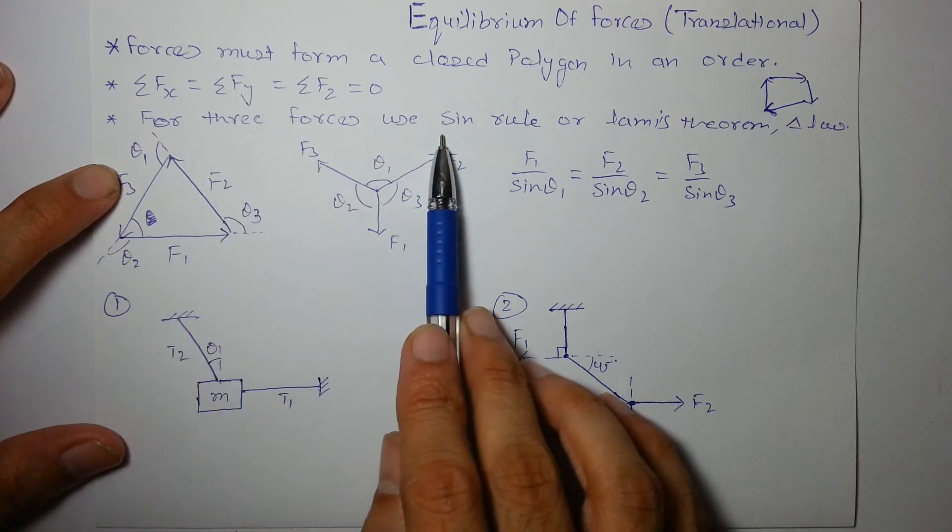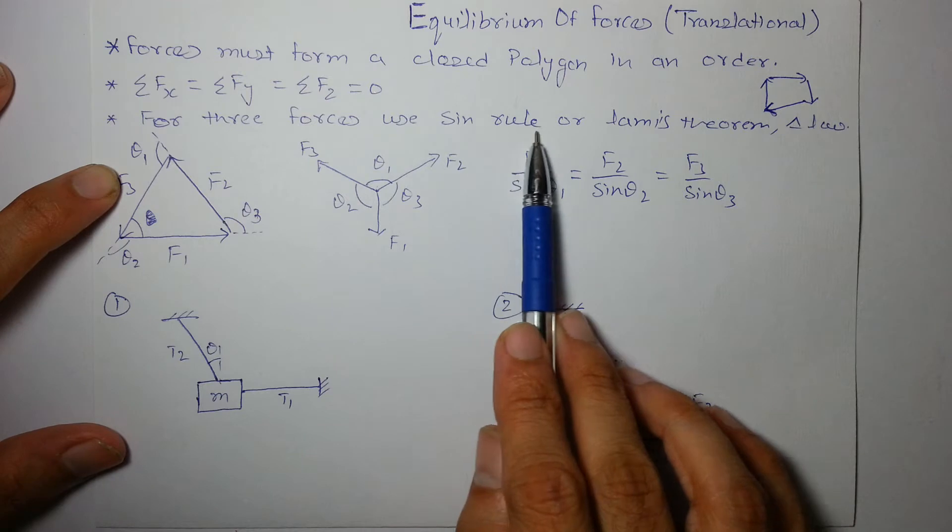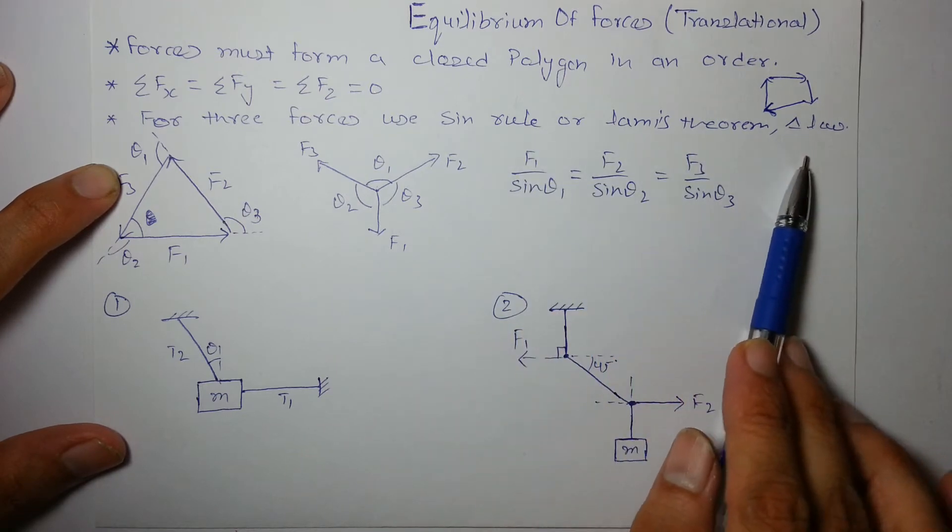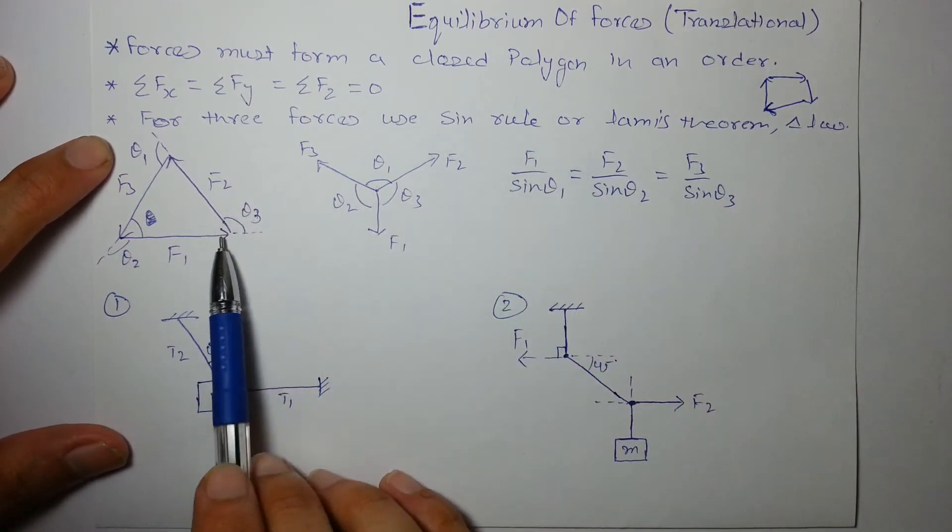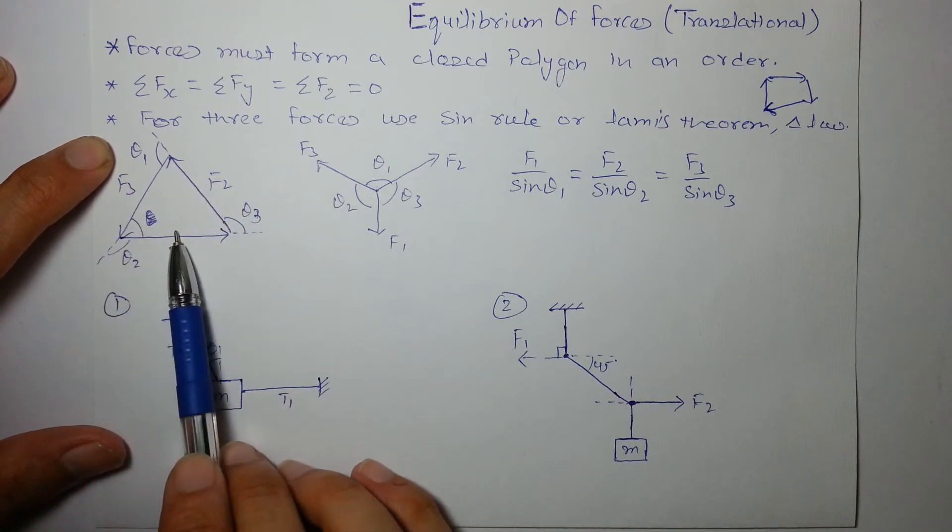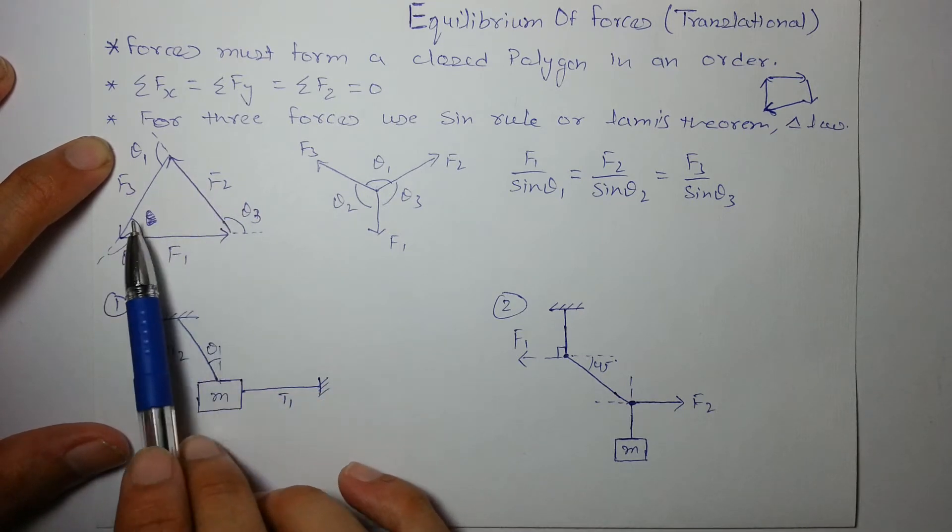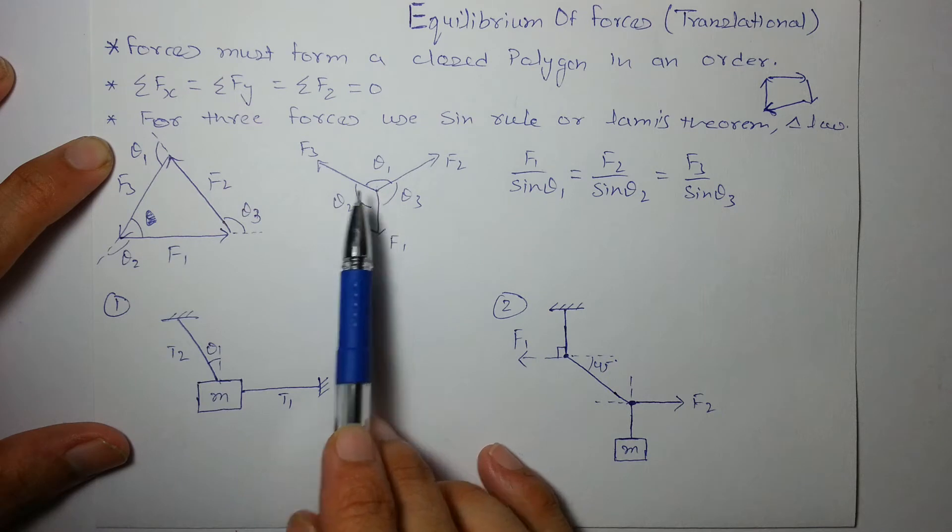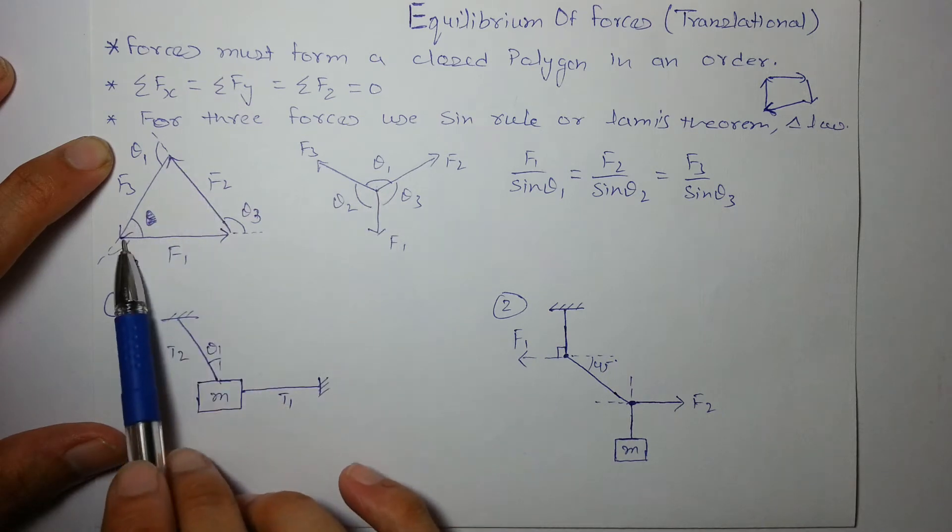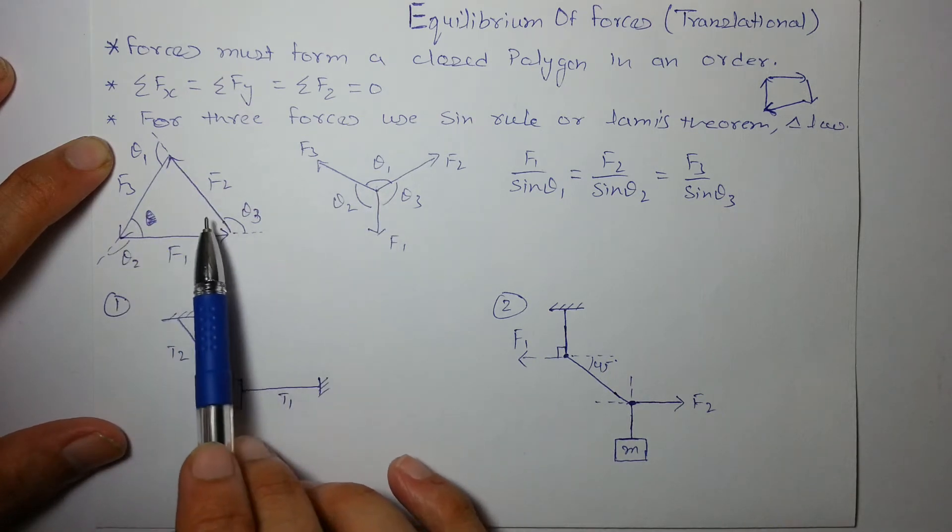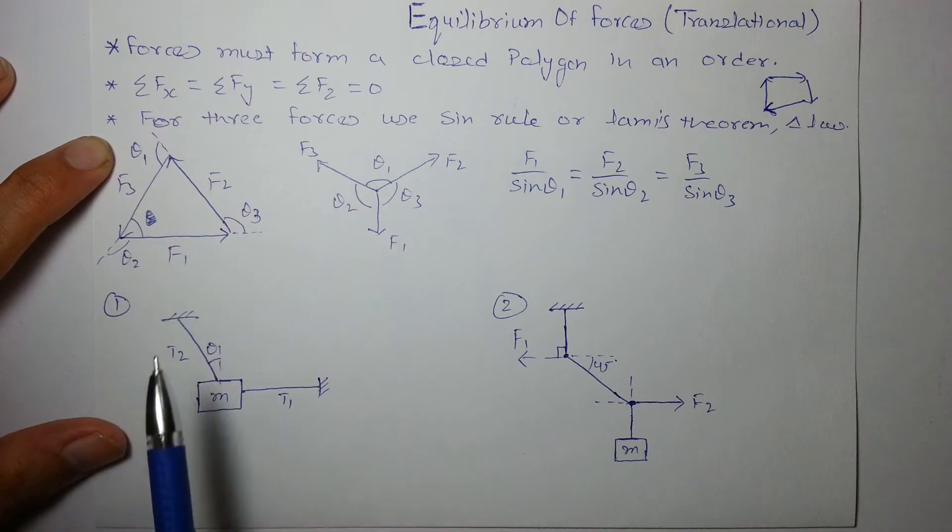Again for three forces we can form a triangle and use sine rule, Lamy's theorem or triangle law. They are all same. What they say is, let's say these are the forces acting on a particle. Again these are forces acting on a particle like this. But we can form a closed triangle in an order like this. And if the opposite angles are named as f1 opposite angle is theta 1, the angle opposite to 2 is theta 2 and that of 3 is theta 3.